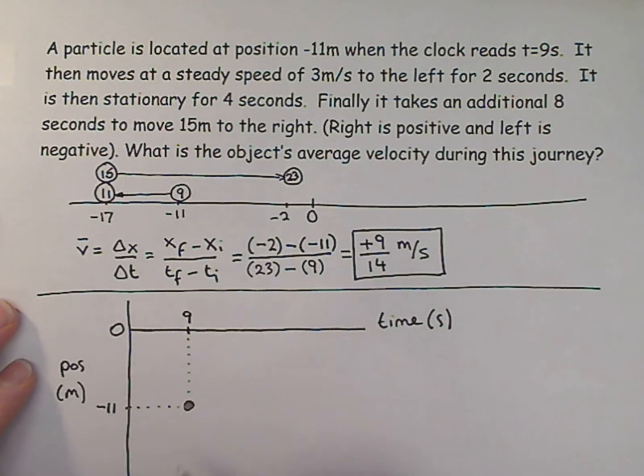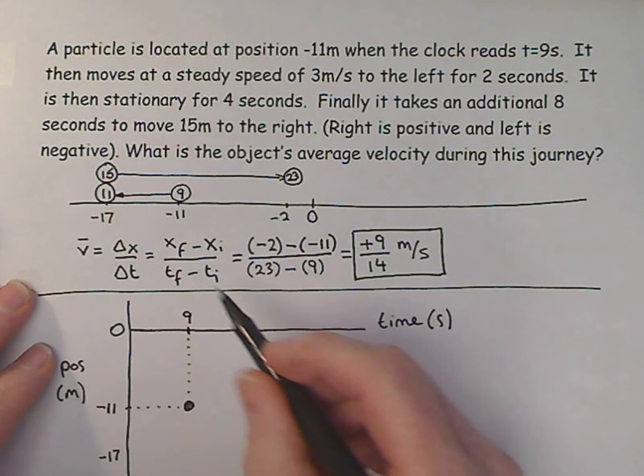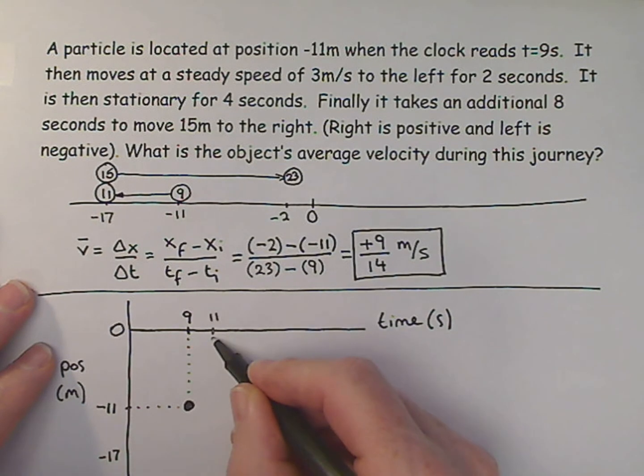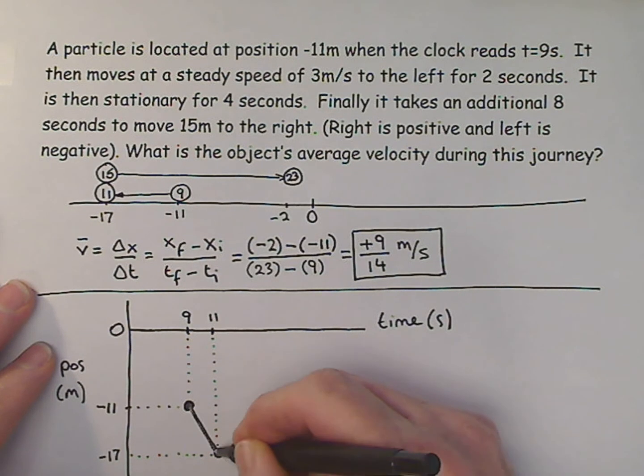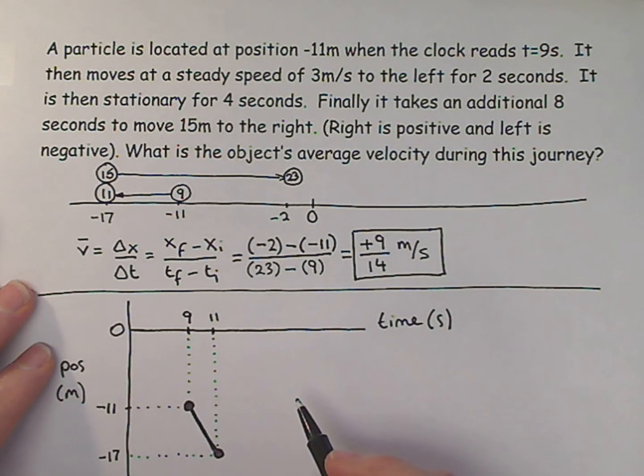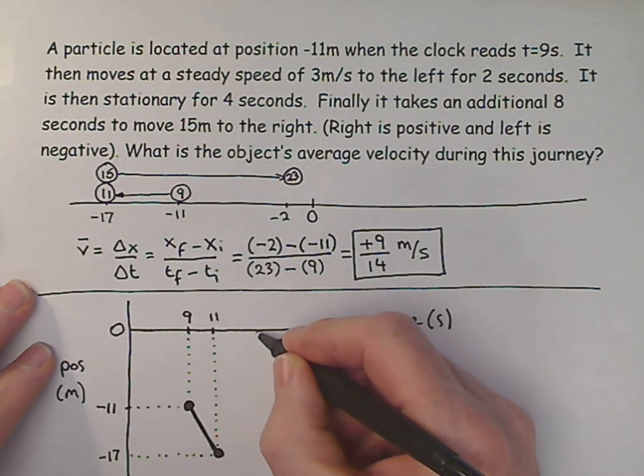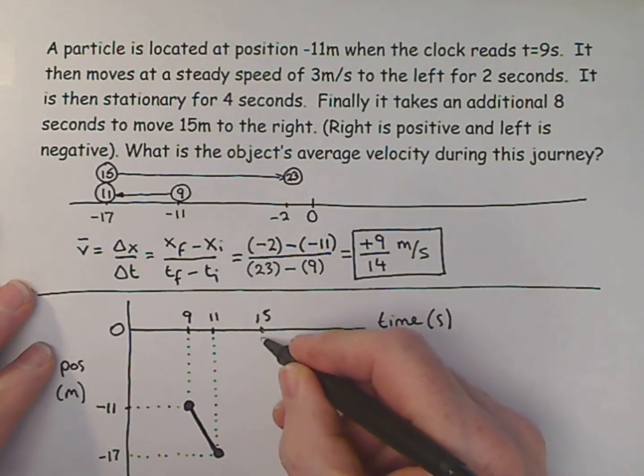And there's the start of my journey. And then I know that I go to minus 17. But my clock is now at 11 seconds. And that's the part of the journey I've done so far. And then I know I am stationary for another four seconds. So that's 11 through to 15. So that's going to be 9, 11, and 4 makes 15. So this is 15 seconds. And I didn't go any further.